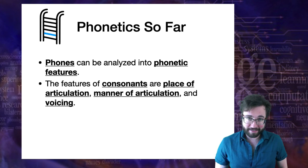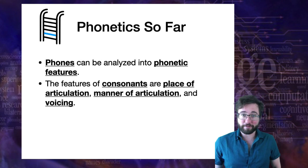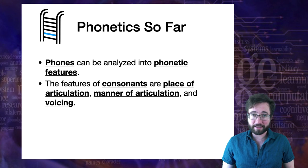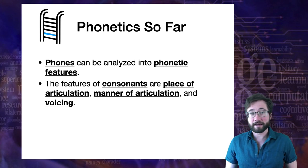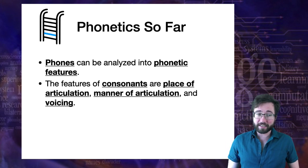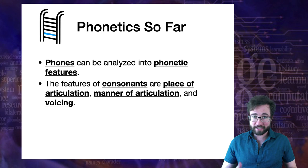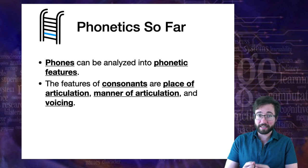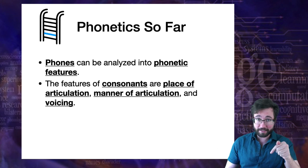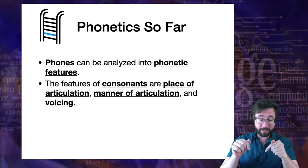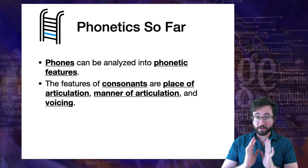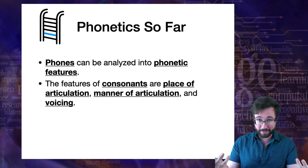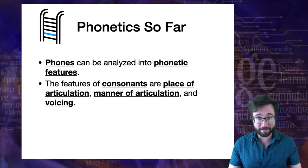For consonants, the phonetic features are place of articulation, manner of articulation, and voicing. You can think of these phonetic features as little instructions that tell you how to pronounce the sound. If you specify the place of articulation, the manner of articulation, and the voicing, that tells you how to produce and classify the sound.